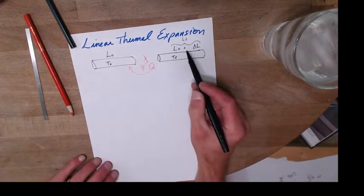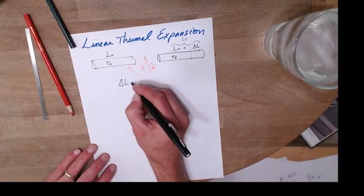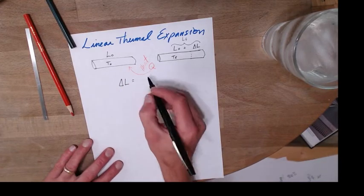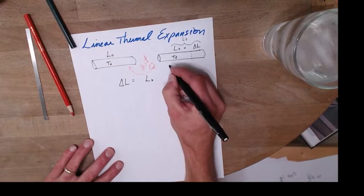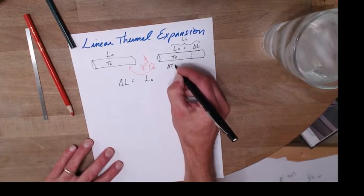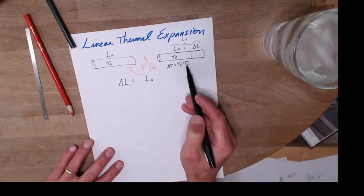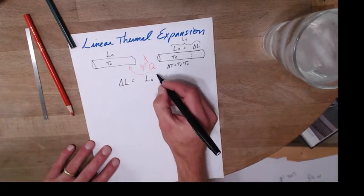So how much has this changed? So linear expansion is going to be that change in length is going to depend on my initial length, the change in temperature. So the change in temperature is T final minus T initial. Remember we don't have negative temperatures anymore, everything's in Kelvins. Delta T.